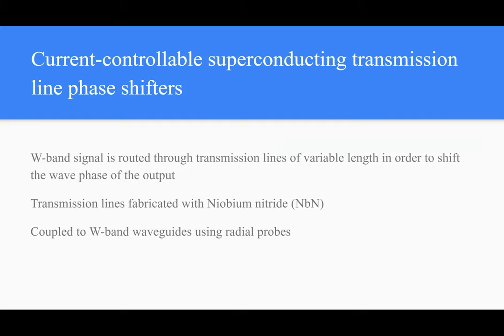Next, we have our current controllable superconducting transmission line phase shifters. These devices take our W-band signal and route them through transmission lines of different length in order to change the phase shift of the wave. These transmission lines are fabricated with niobium nitride, which is a very superconducting material. And these will be coupled to W-band waveguides using radial probes.